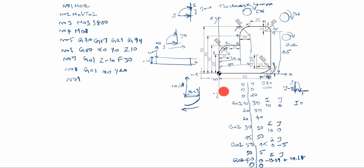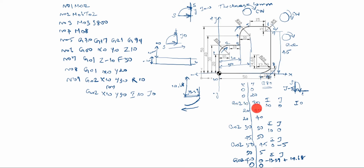Up to here finished. After that this one is G02. We will use G02, X10, Y30, I10, J0. Up to here finished — this line finished. Next: X20, Y30 — this line. N10: G01, X20, Y30. Y 30 is already written above, so no need to write it again.